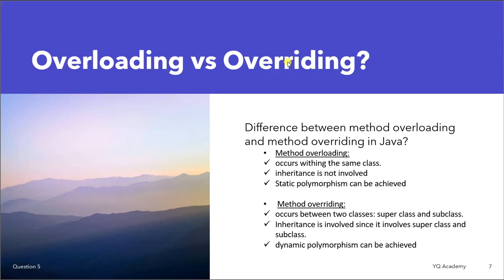Number 5: Difference between method overloading and method overriding in Java. Method overloading occurs within the same class while method overriding occurs between two classes — superclass and subclass. For method overloading, inheritance is not involved since it involves only one class. For method overriding, inheritance is involved since it involves superclass and subclass. Static polymorphism can be achieved using method overloading, while dynamic polymorphism can be achieved using method overriding. In overloading, one method cannot hide the other; however, in overriding, the subclass method hides the superclass method.